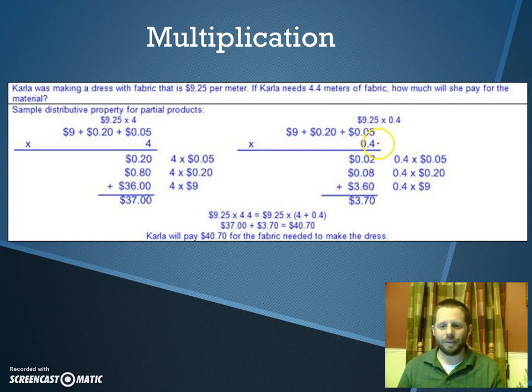Now over here, you got 0.4. Again, breaking the $9.25 into its individual place values. We can do 0.4 times 0.05, which gives us 0.02. 0.4 times 0.20, which gives us 0.08. And then 0.4 times 9, which gives us 3.60.